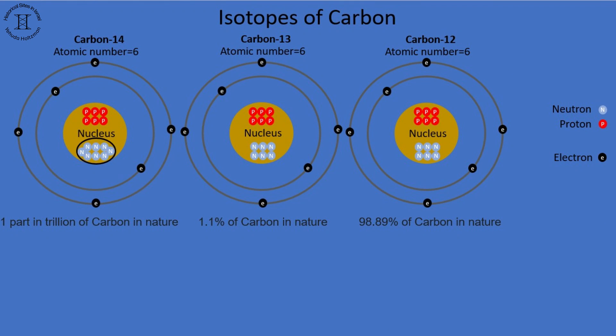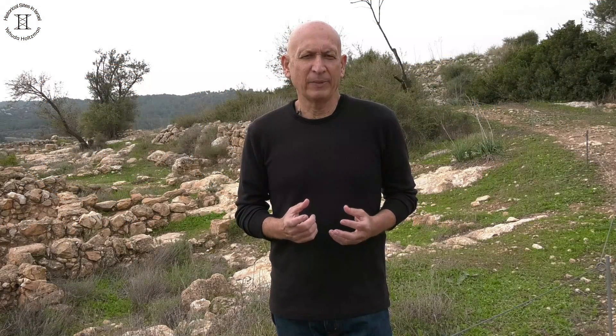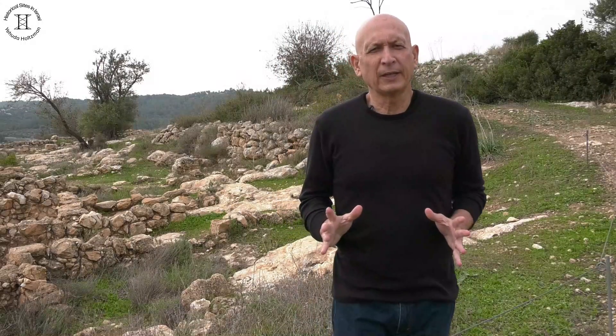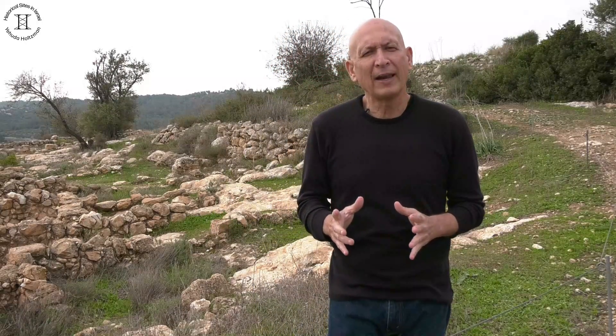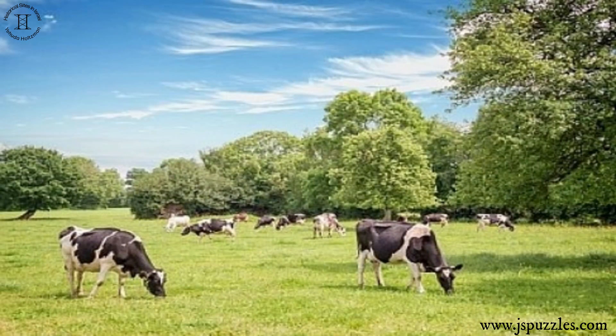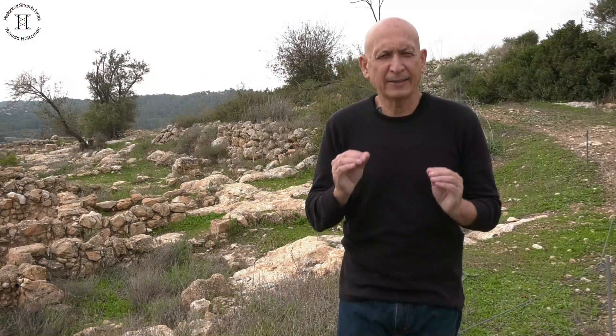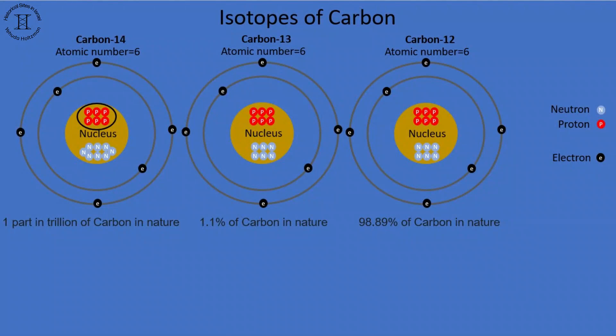All the isotopes together make up 100%, so the ratio between them is known to us. Carbon-14, like the other carbons, is assimilated in plants from the atmosphere through photosynthesis — the conversion of light into chemical energy. From the plants, it passes to animals because they eat plants, which means that every organic substance has carbon-14.